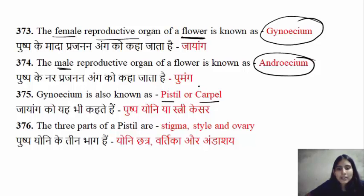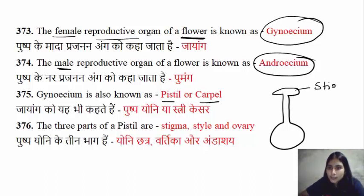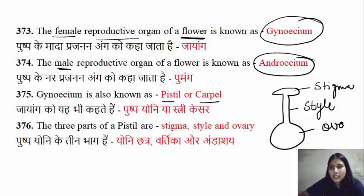Pistil has three parts: stigma, style, and ovary. The topmost part is stigma. The stalk is the style. And the lowest part is ovary.